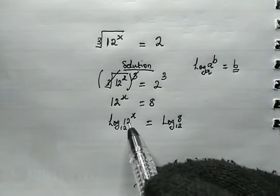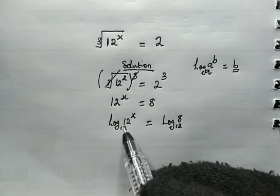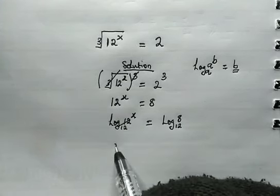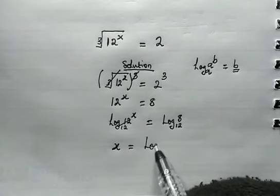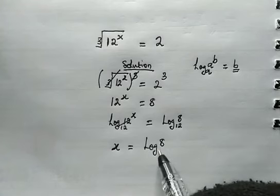So here we have log of 12 raised to the power x, to the base 12. This will cancel out and we are left with x. So from here we get x is equal to the log of 8 to the base 12.